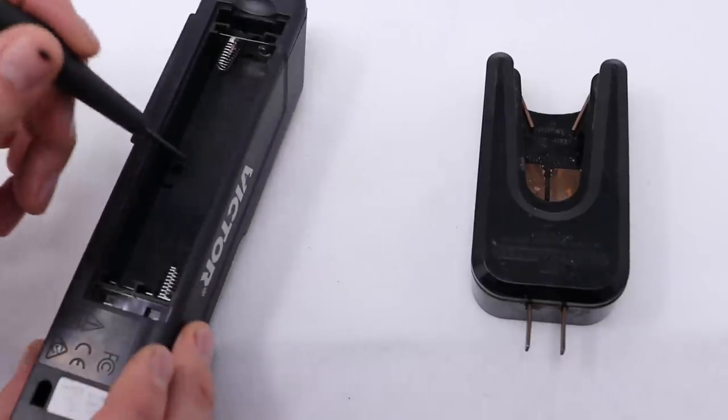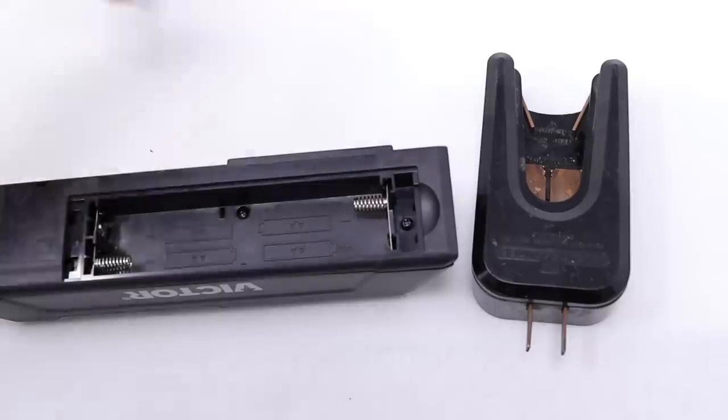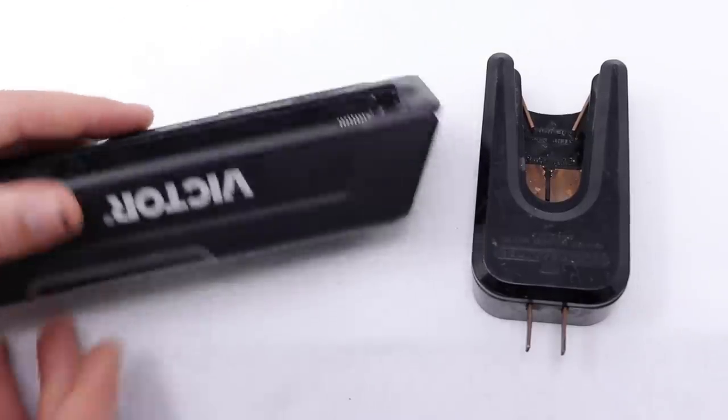I'm going to start by taking this trap apart. To do that, I'm going to remove four screws. There, now the screws are loose. As you can see, this works on four AA batteries, so this is six volts total. We'll pop this off.